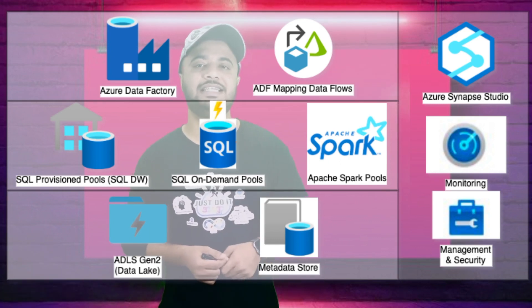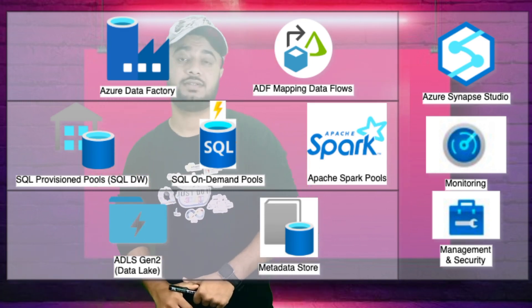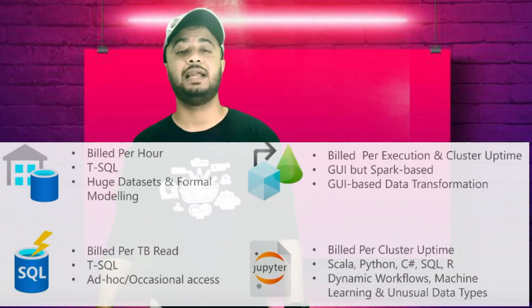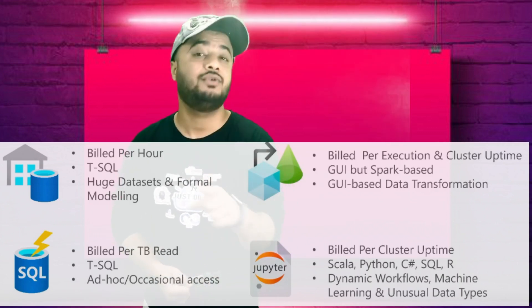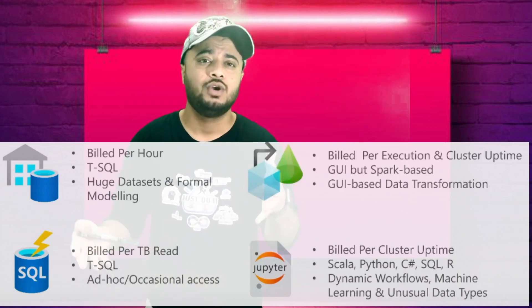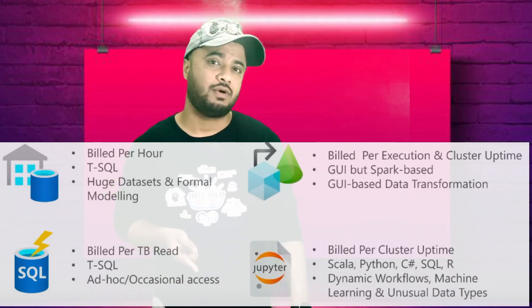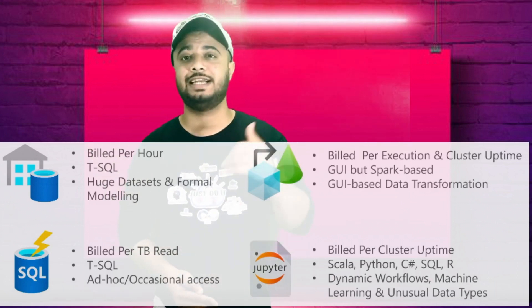Now let's discuss the billing options and features of the different compute options. Dedicated SQL pools are billed on a per-hour basis. If you run the SQL pool for one hour you will be charged for that, and even if you use it for half an hour you will still be charged for a full hour. This dedicated SQL pool can be paused, scaled up, and scaled down just as you would with a traditional data warehouse.